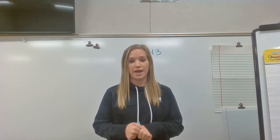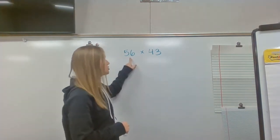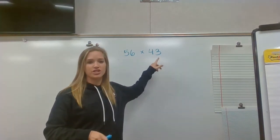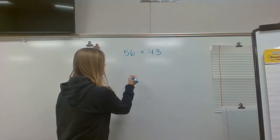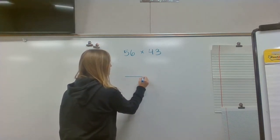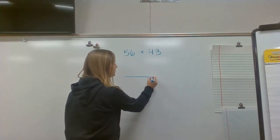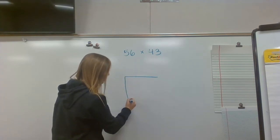So today, we're going to be learning how to use area model when multiplying a two-digit number by another two-digit number. So the first thing I need to do is set up my box. So I'm going to make sure I have plenty of room for my two-digit number this way and my two-digit number this way.